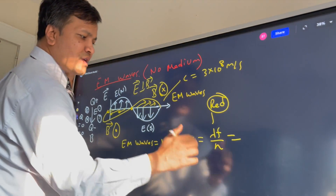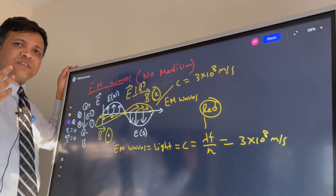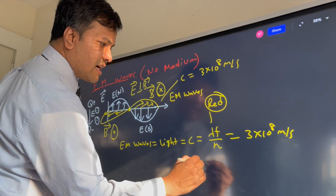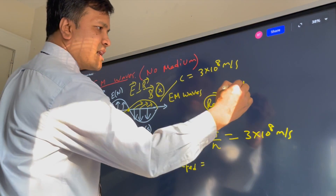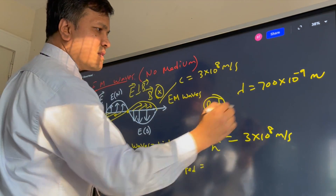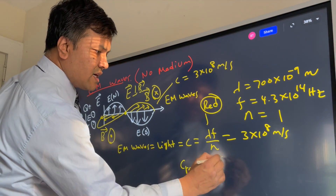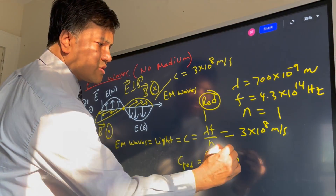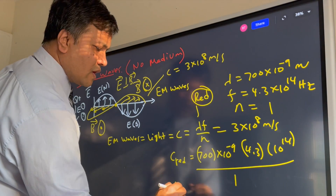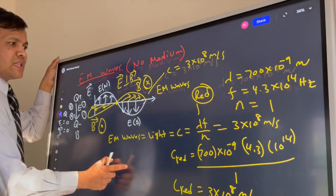The speed C is always 3 × 10⁸ meters per second in a vacuum, whether it is red or blue light. For red light, lambda is 700 × 10⁻⁹ meters and the frequency is 4.3 × 10¹⁴ Hz. Multiplying these gives C = 3 × 10⁸ meters per second, confirming the speed of light.